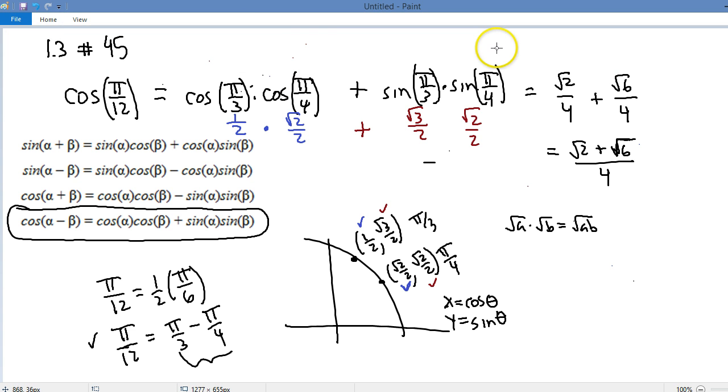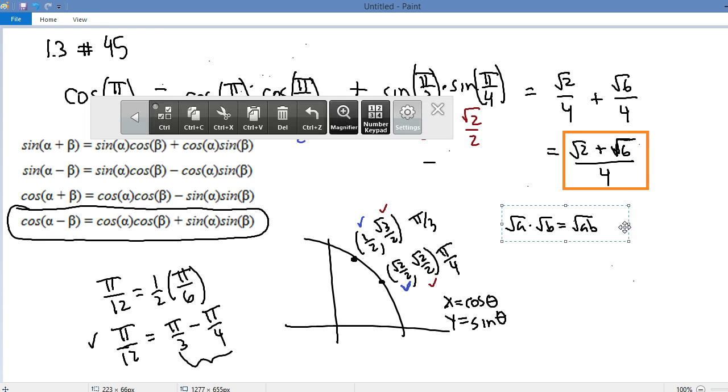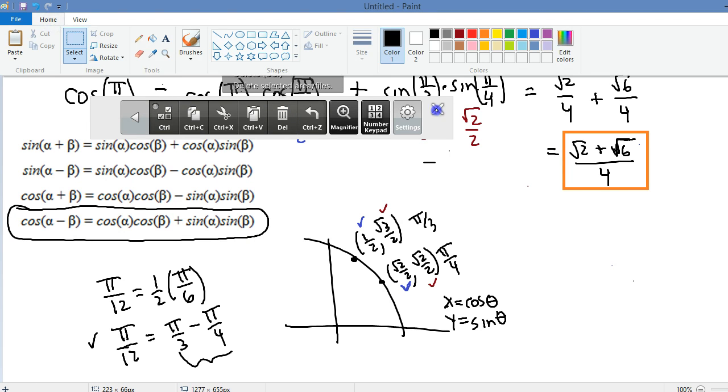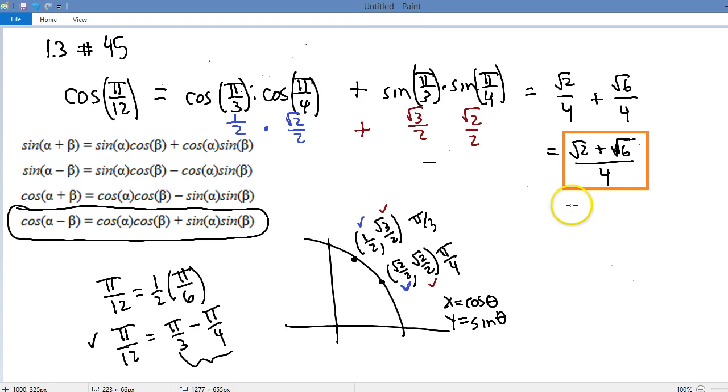What else you could do would be to factor out what they have in common in the numerator. Both terms in the numerator have a root 2 in common. So we could factor that out. If we factor out the root 2, we'll be left with a 1 from the first term and a root 3 from the second term.